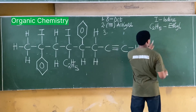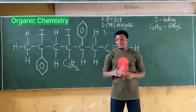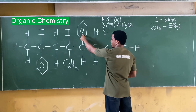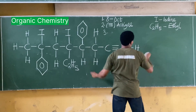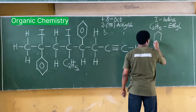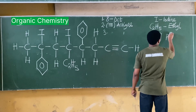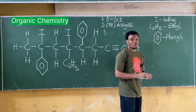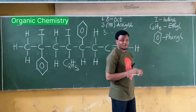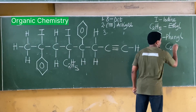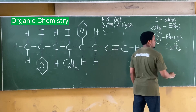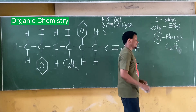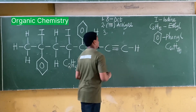I also have this attachment to the parent carbon: C2H5, which is called the ethyl group — part of the alkyl group. Additionally, there's this structure connected here, which is called phenyl. Phenyl is essentially a benzene ring (C6H6) that has lost one hydrogen, making its formula C6H5.